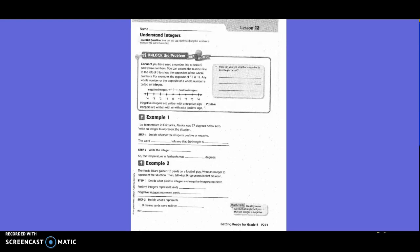Any whole number or the opposite of a whole number is called an integer. Negative integers are written with a negative sign. Positive integers are written with or without a positive sign.